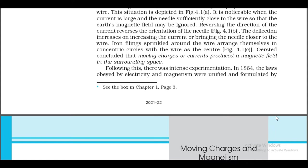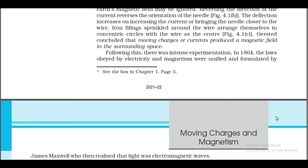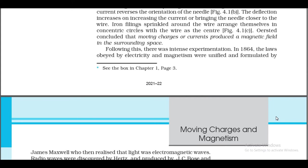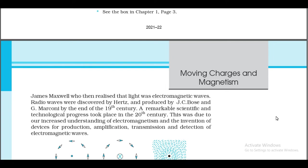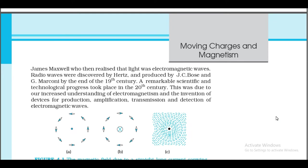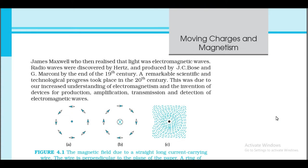Oersted concluded that moving charges or currents produce a magnetic field in the surrounding space. Following this, there was intense experimentation. In 1864, the laws obeyed by electricity and magnetism were unified and formulated by James Maxwell, who then realized that light was electromagnetic waves. Radio waves were discovered by Hertz and produced by J.C. Bose and G. Marconi. By the end of the 19th century, remarkable scientific and technological progress took place in the 20th century due to our increased understanding of electromagnetism and the invention of devices for production, amplification, transmission, and detection of electromagnetic waves.